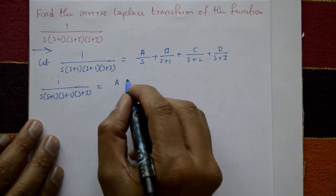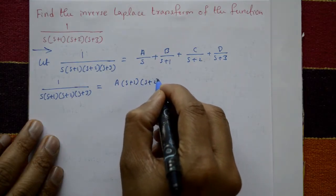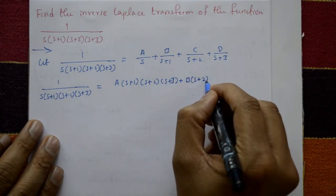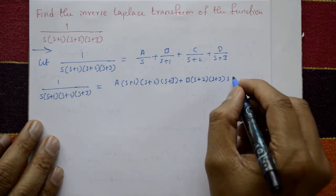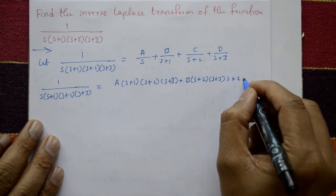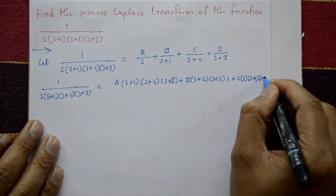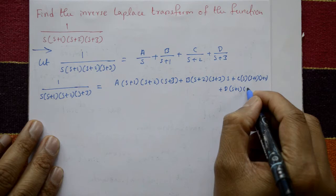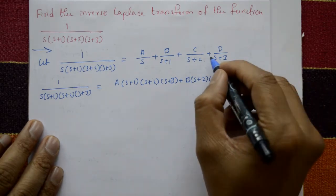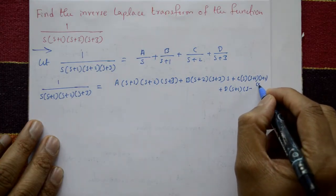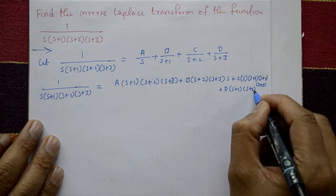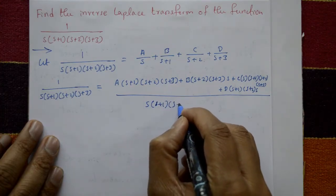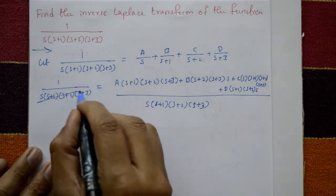The right side expands as: A into s plus 1 into s plus 2 into s plus 3, plus B into s into s plus 2 into s plus 3, plus C into s into s plus 1 into s plus 3, plus D into s into s plus 1 into s plus 2, all divided by s into s plus 1 into s plus 2 into s plus 3.